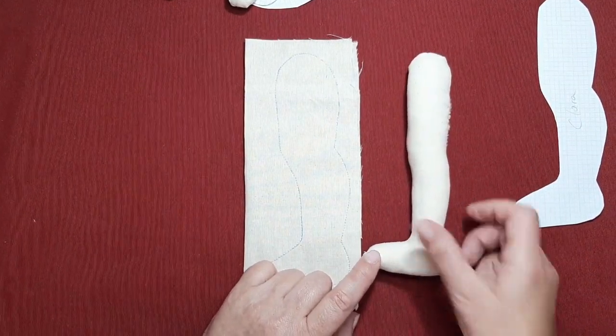Bueno, yo ya he avanzado. He cosido los brazos a Clara. Le he puesto la braguita y le he hecho la media.